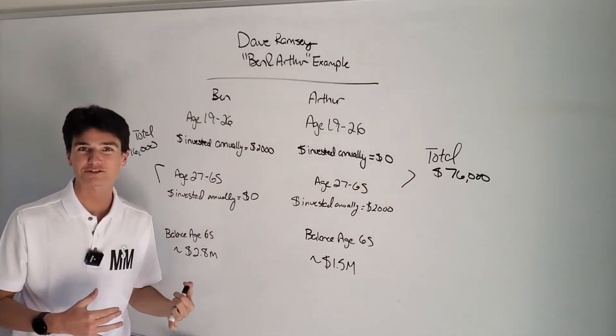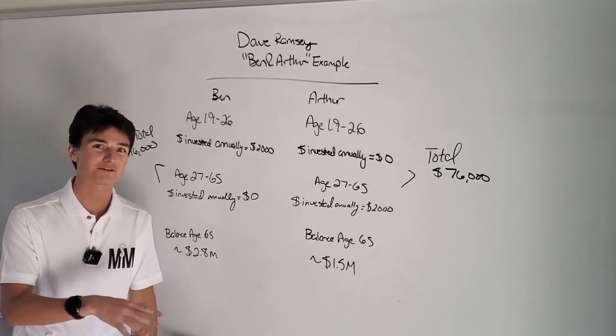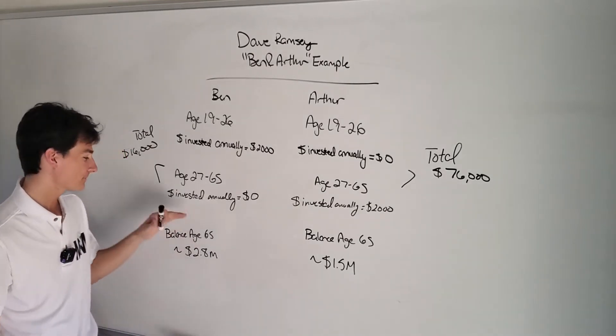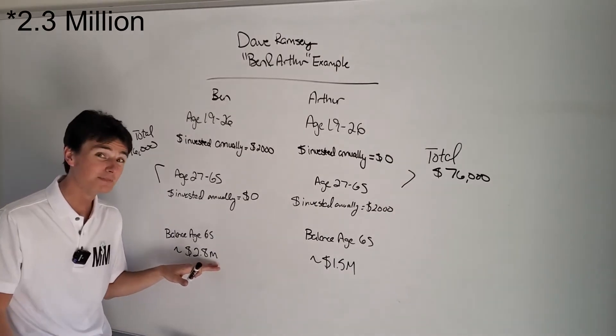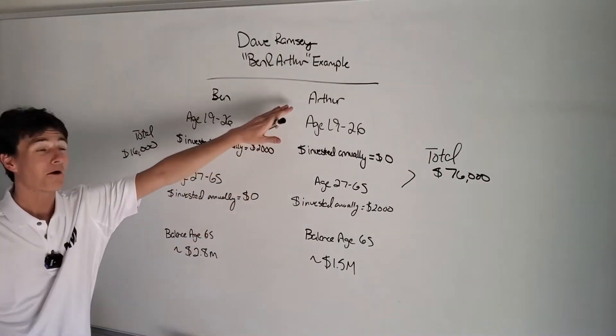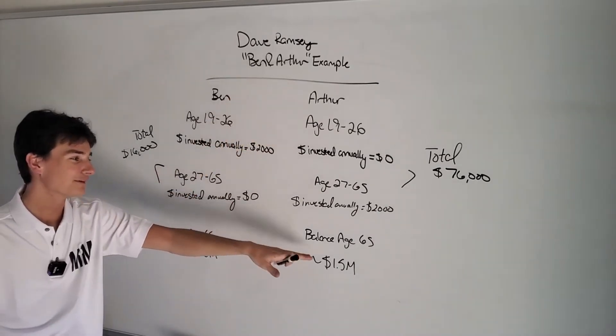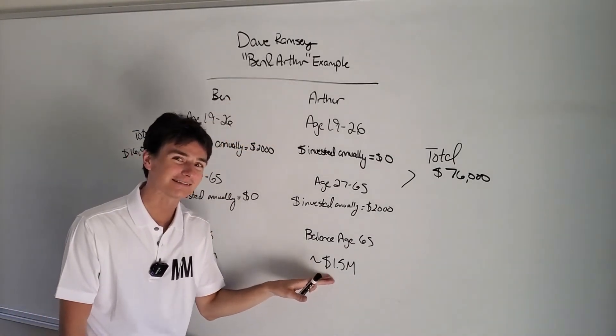If each of these investments was put in the S&P 500, 12% a year, Ben at age 65 would have $2.8 million for retirement. Pretty cool, right? Arthur, on the other hand, would only have $1.5 million at that time.